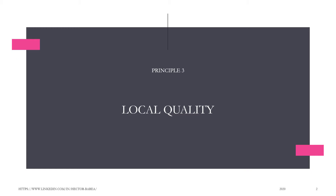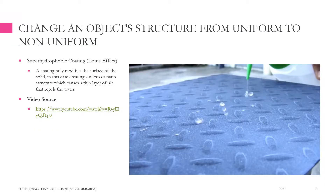Principle 3: Local Quality Change — change an object's structure from uniform to non-uniform. For example, a superhydrophobic coating, also known as the Lotus Effect. A coating only modifies the surface of the solid, in this case creating a micro- or nano-structure which causes a thin layer of air that repels the water.